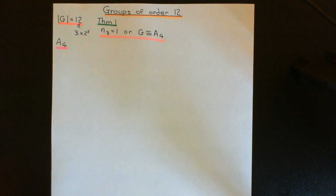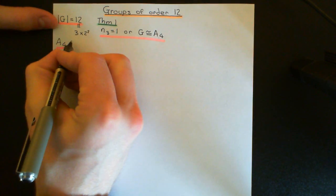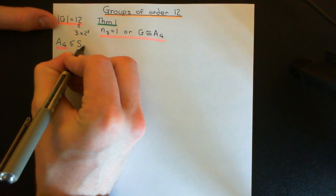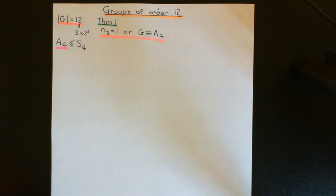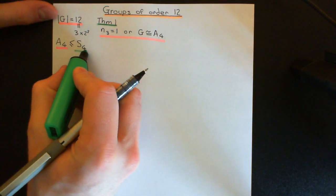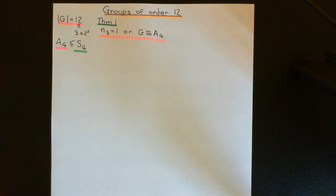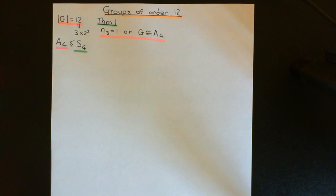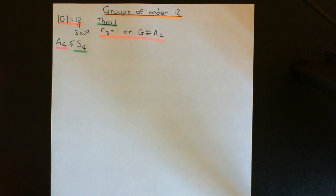From the video on alternating groups earlier in this playlist, we know that the alternating group on the set of four elements is going to be a subgroup of the symmetric group on the set of four elements, and it's going to be the subgroup that contains all of the even permutations. Half of the elements of S4 are even permutations and half are odd. Therefore the order of A4 is half the order of S4. The order of S4 is 4 factorial, which is 24, so half of that is 12 — bingo, A4 is a group of order 12.